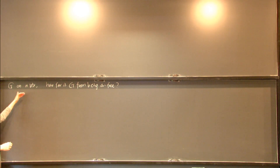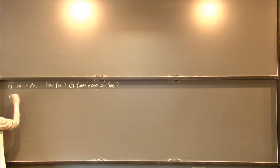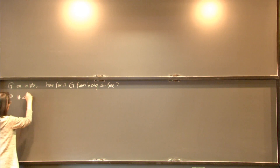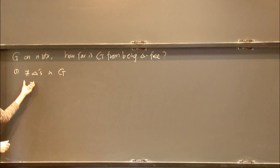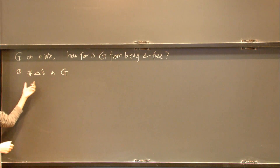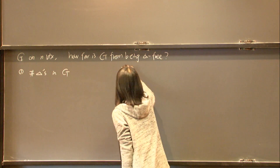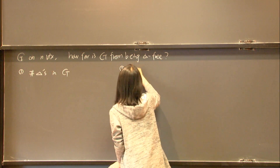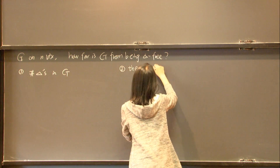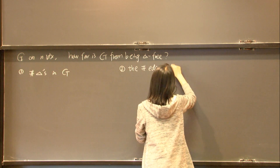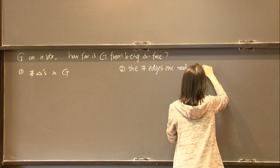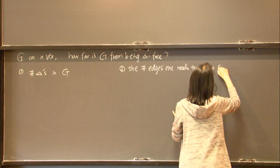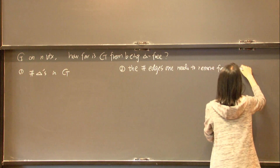There are two types of quantities we can use to measure how far G is from being triangle-free. The first one is we count the number of triangles in G. If G is triangle-free then that count is zero. The second quantity is the number of edges one needs to remove from G to make it triangle-free.